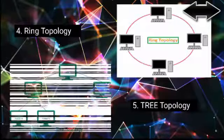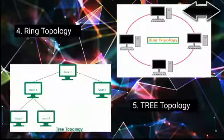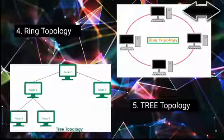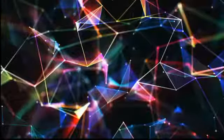Tree topology is one of the most common network setups. It consists of a group of star-configured workstations connected to a linear bus backbone cable. Essentially, one star network is connected to other star networks, as you can see in the diagram.